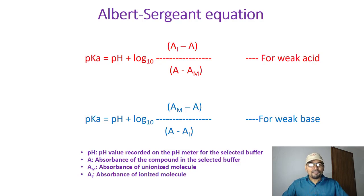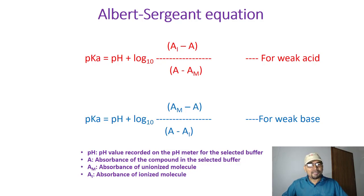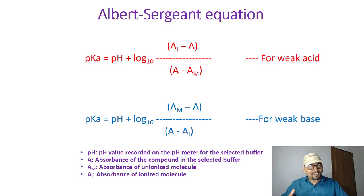For the weak basic compound, the pKa equals pH plus log base 10 of (Am minus A) divided by (A minus Ai). With this equation you will be able to measure the pKa of a weakly acidic or weakly basic compound.